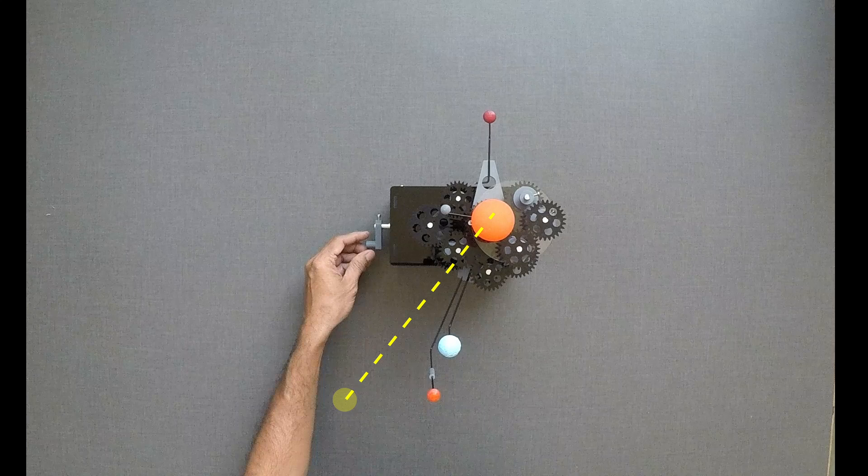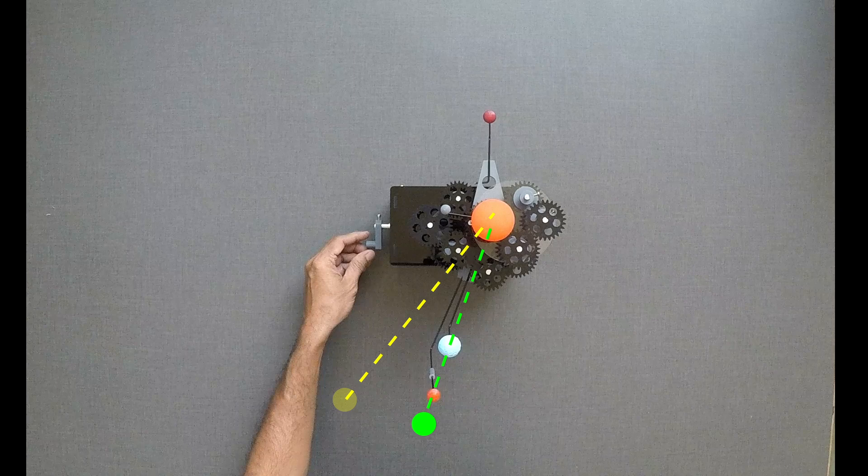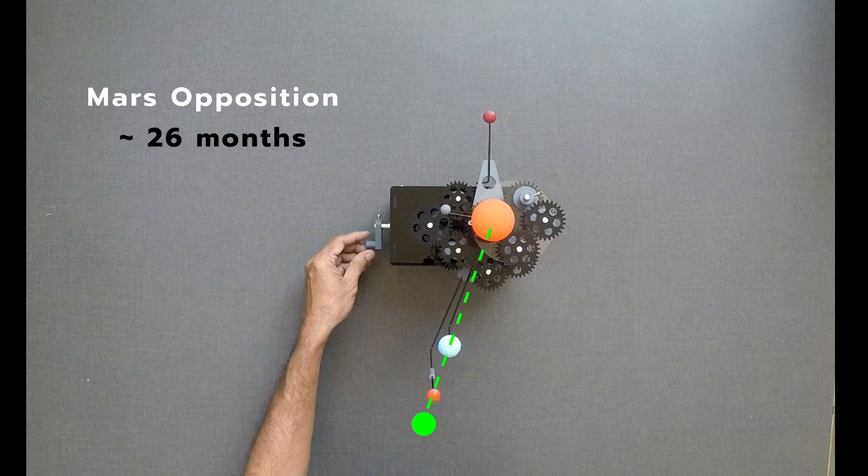Locations at which opposition takes place between Mars and Earth do change over the period of time. Mars opposition happens about every 26 months.